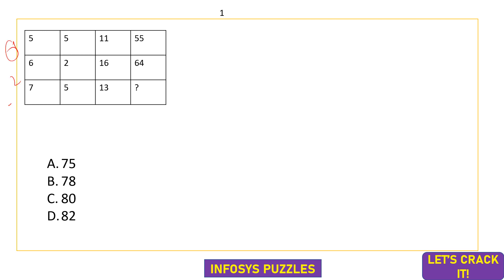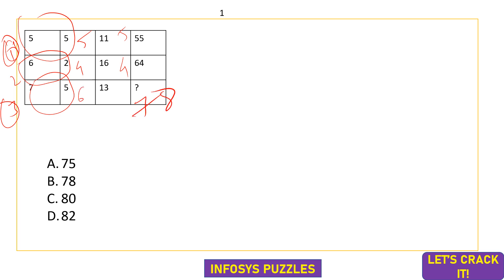Here comes the first example: 5, 5, 11, 55 in the rows. The logic: 11×5 = 55, and 16×4 = 64. On the left side, the average of the first two columns: 5+5=10, 10÷2=5; 6+2=8, 8÷2=4; 7+5=12, 12÷2=6. So 13×6 = 78, 16×4 = 64, 11×5 = 55. Option B is the correct answer.